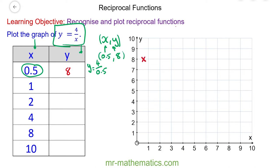The next one: y is equal to 4 over 1, so y is equal to 4. This coordinate goes at 1 across and 4 up. Then we have y is equal to 4 over 2, so y is equal to 2 when x equals 2, and this point goes here.